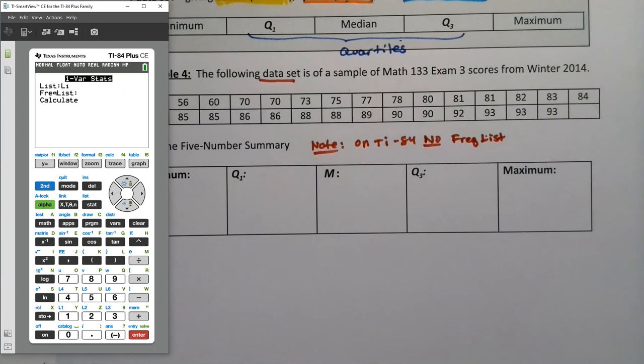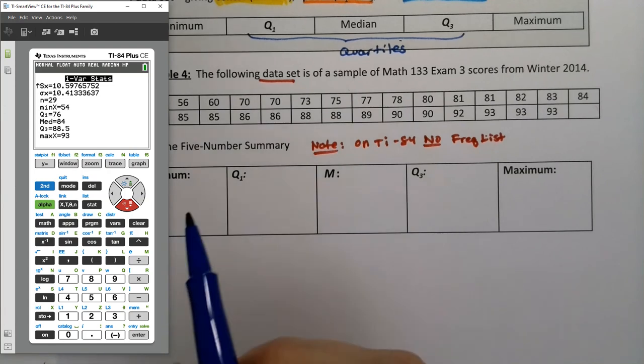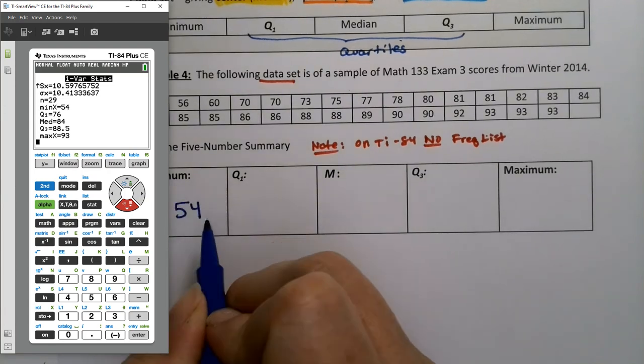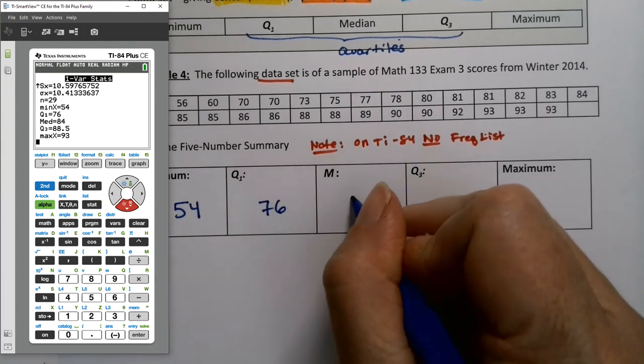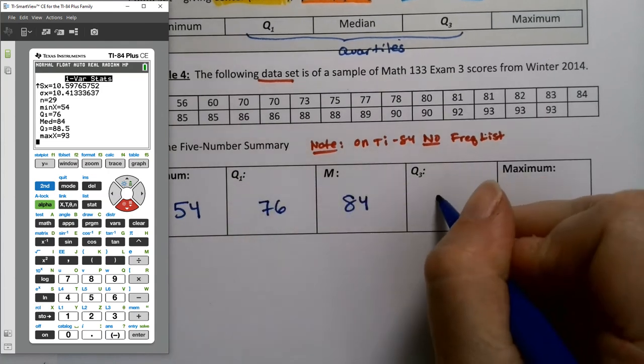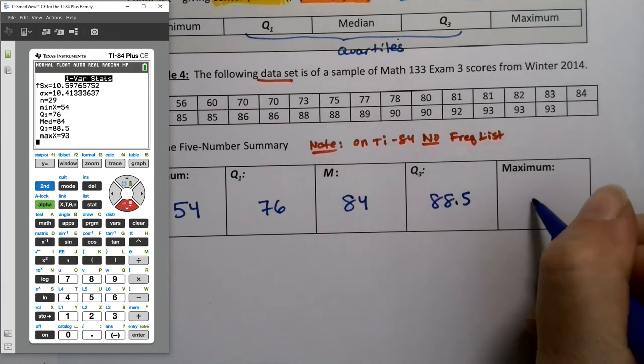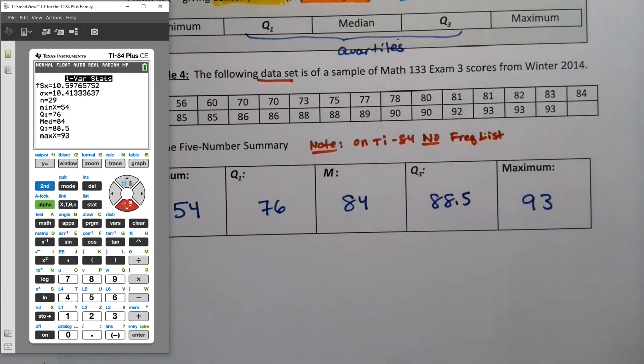Okay. All right. So go down to calculate and press enter. And the five number summary is at the bottom. So you have to hit the down arrow a bit. And there's the min, there's Q1, there's the median, there's Q3, and there's the max. So the minimum, and I put this data set in order, so it wasn't exactly difficult to find, but it's 54, 76, 84, 88.5, and 93. There they are.